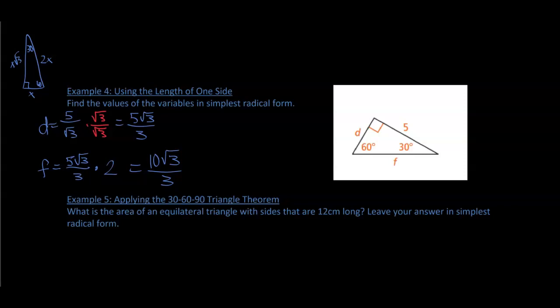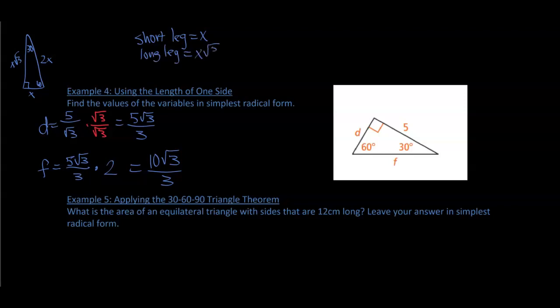Just to make sure everyone is clear: the short leg is x, the long leg is x times the square root of three, and the hypotenuse is 2x. Using those formulas you can figure out any missing side of a 30-60-90 triangle if you know one of them.